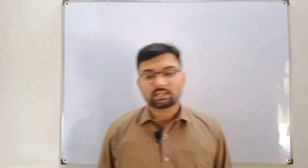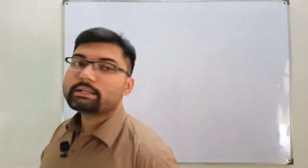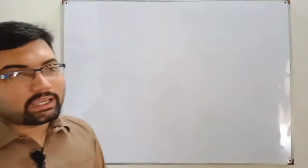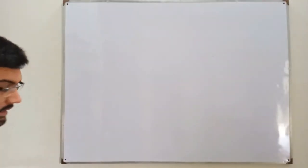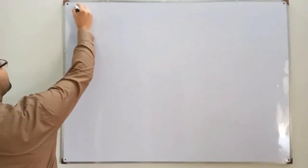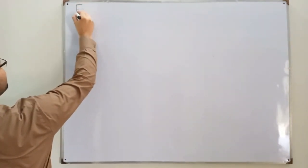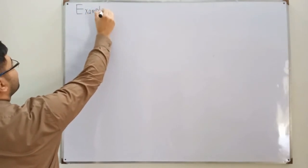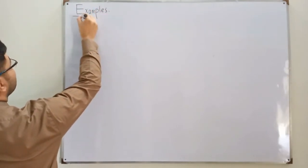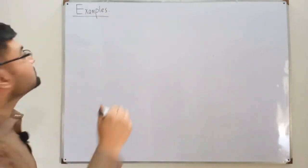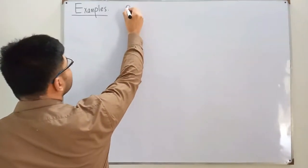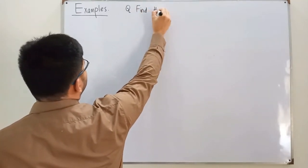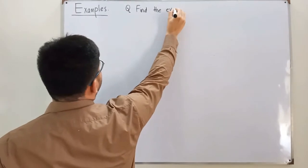Bismillahirrahmanirrahim, assalamu alaikum. Continuing the topic of even and odd signals, today we see some examples. The topic we discuss here is on the even and odd components of a signal. The question is: find the even and odd components of the following signals.